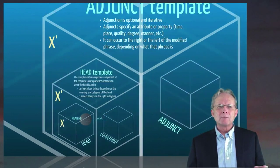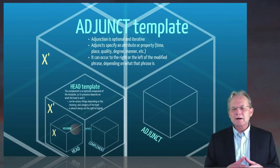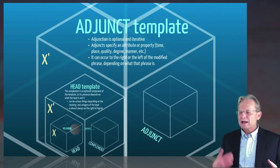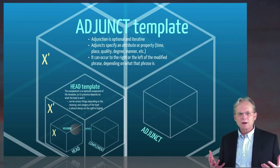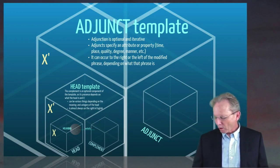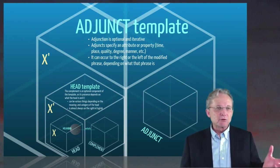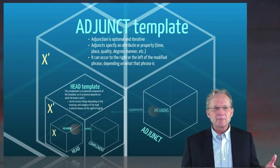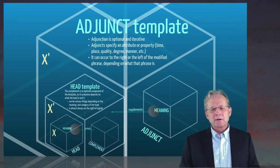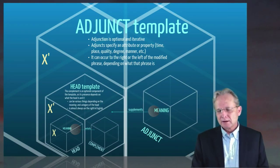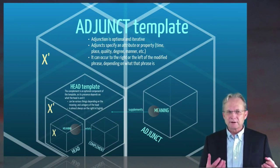And then we can go to a higher level where adjuncts are added and they can be added to the left or the right. We can do this as many times as we want. We can have one or more adjuncts or zero or more adjuncts. You don't need to have any. And these supplement the meaning that you get from the head or the head plus its complement.